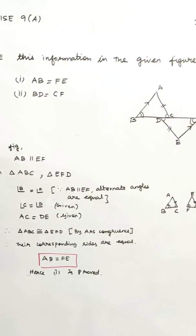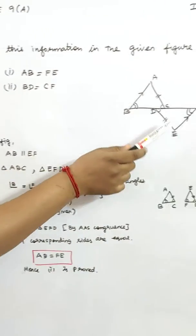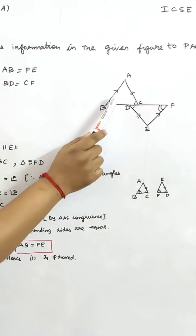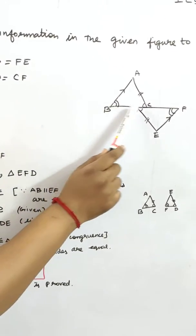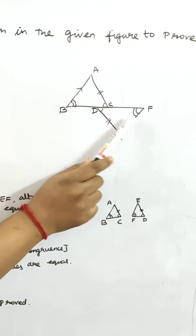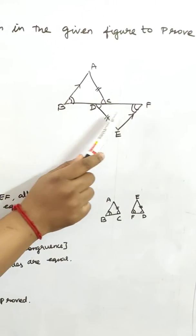So in the figure, AB is parallel to EF and angle B equal to angle F. AB parallel to EF and BF is transverse. These two angles are alternate angles, so angle B equal to angle F.